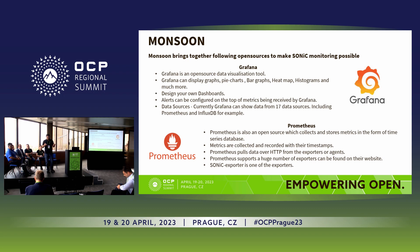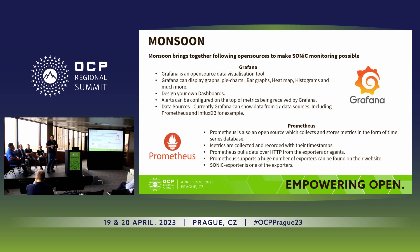Metrics are collected and recorded with their timestamps. Prometheus speaks to the exporters over HTTP. Prometheus supports a huge number — a humongous number — of exporters currently available as open source, which you can install on your device and get metrics from. The Sonic exporter is not yet in the list of officially supported exporters of Prometheus, but we are working on that. The Sonic exporter is separately available as open source. You can install it, and it is fully integrated into Prometheus, and the full stack includes Grafana, Prometheus, and the exporter.